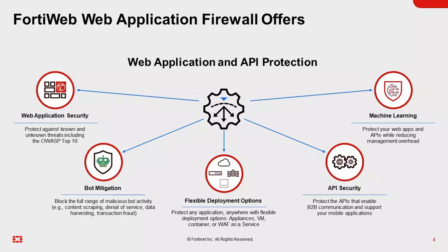Advanced threat analytics: FortiWeb employs advanced threat analytics to identify critical threats across all protected applications by analyzing patterns and behaviors. It can detect sophisticated attacks and prioritize the most significant threats for immediate attention. In terms of API discovery and protection, FortiWeb also provides machine learning algorithms to automatically discover and evaluate APIs used for business-to-business communication and mobile applications, helping ensure the security of API endpoints and the data they handle.